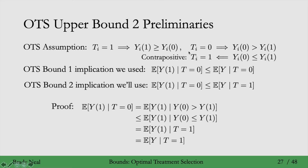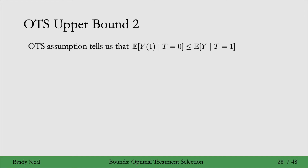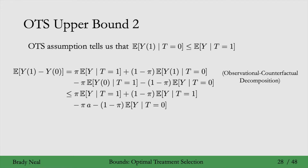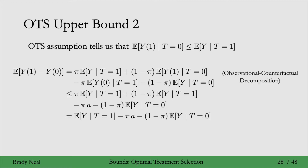Note that we only used the second part of the OTS assumption here. For OTS upper bound 2, starting from the observational counterfactual decomposition, instead of upper bounding the counterfactual term with the expected value of y given t equals 0 as in bound 1, we upper bound it with the expected value of y given t equals 1. Substituting A again for the other counterfactual and simplifying gives us OTS upper bound 2.